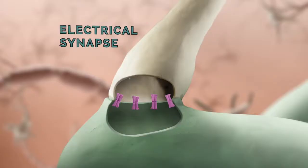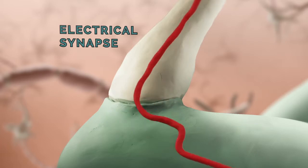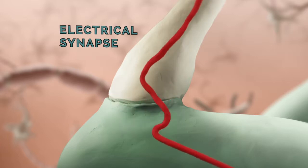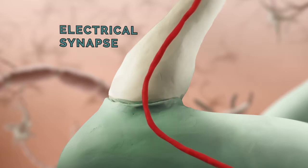Arguably the simplest way to pass a signal from one neuron to the next is to simply connect the two neurons together and rely on the electrical properties of the conjoined cells to carry the signal from cell to cell. This arrangement is called an electrical synapse. In an electrical synapse, there's a physical pore that allows ions to flow through, creating an intercellular current from the upstream neuron to the downstream neuron. The depolarization in the downstream neuron caused by this current, if it reaches threshold, can then cause a propagation of the action potential down the downstream neuron.